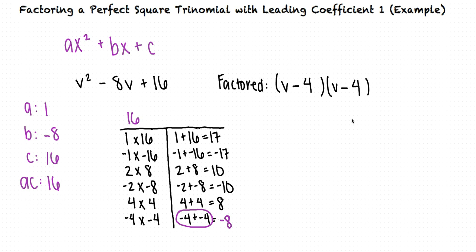We can see that v² - 8v + 16 when factored is equal to (v - 4)(v - 4). But we also notice that v - 4 and v - 4 are the same quantity, so we can rewrite this as (v - 4)².